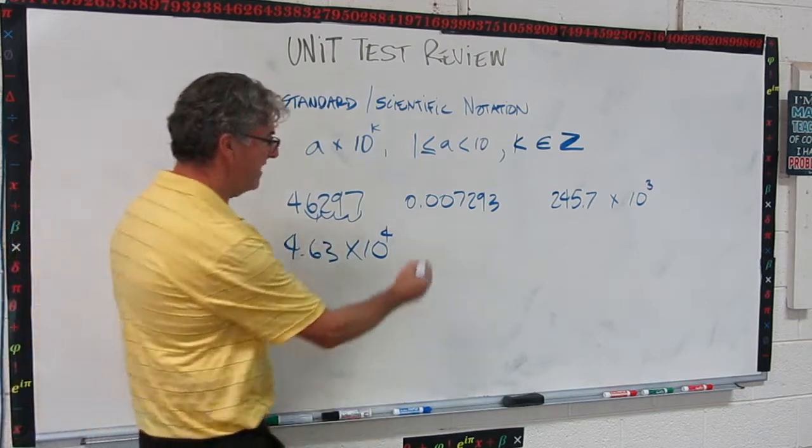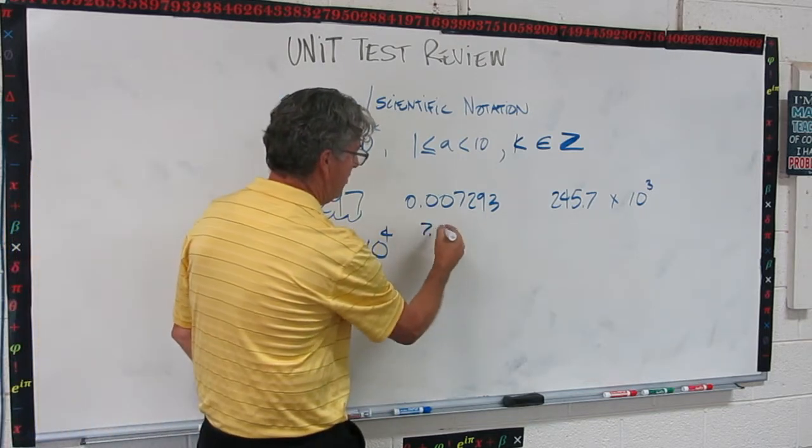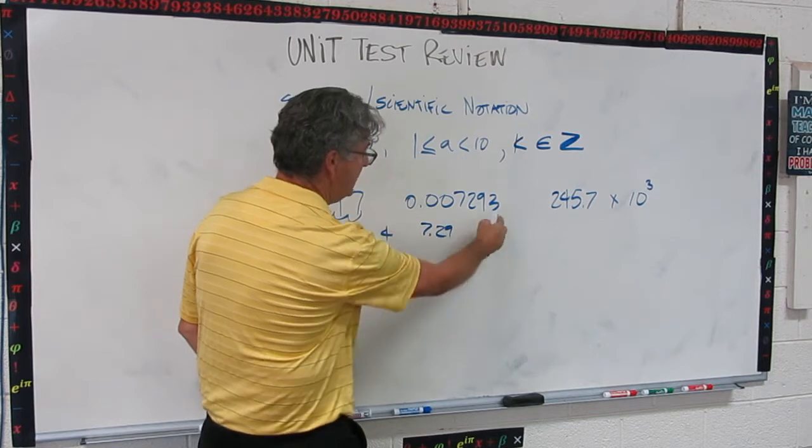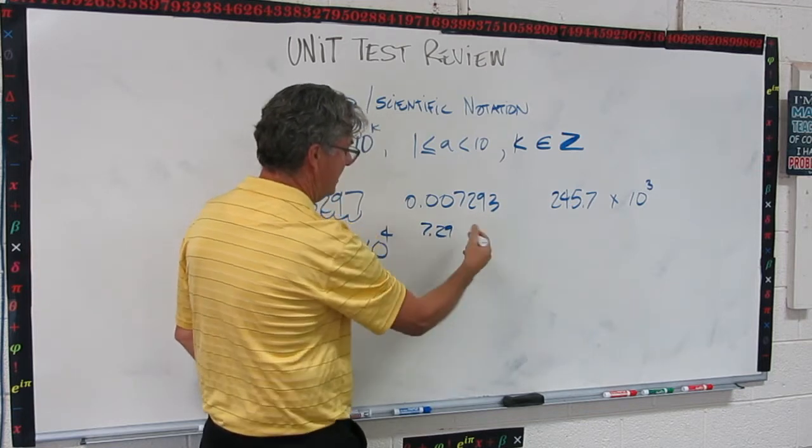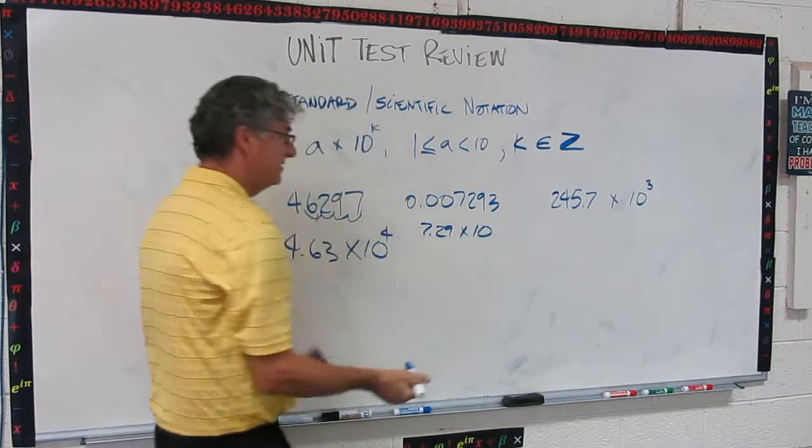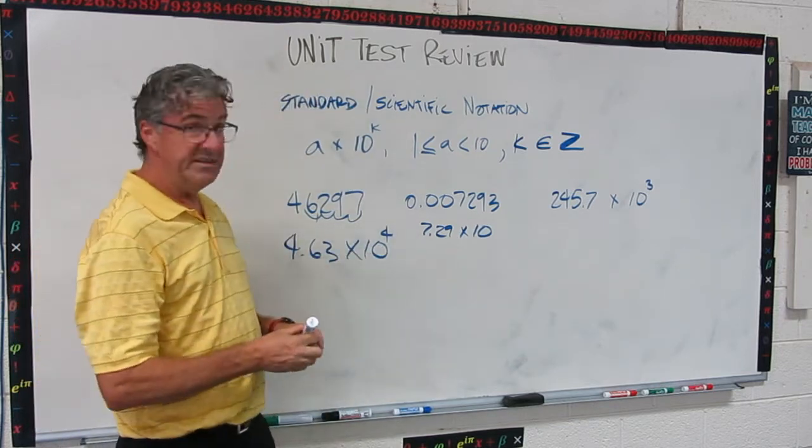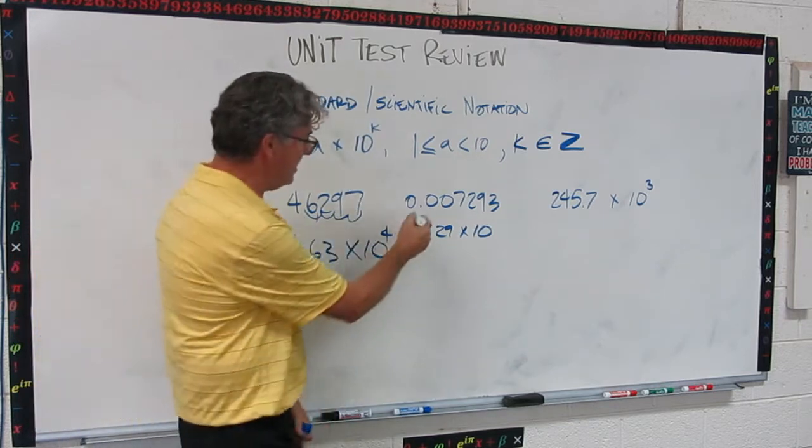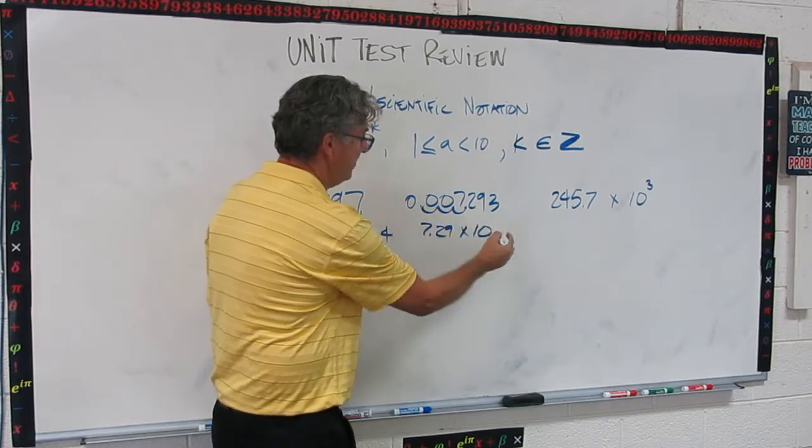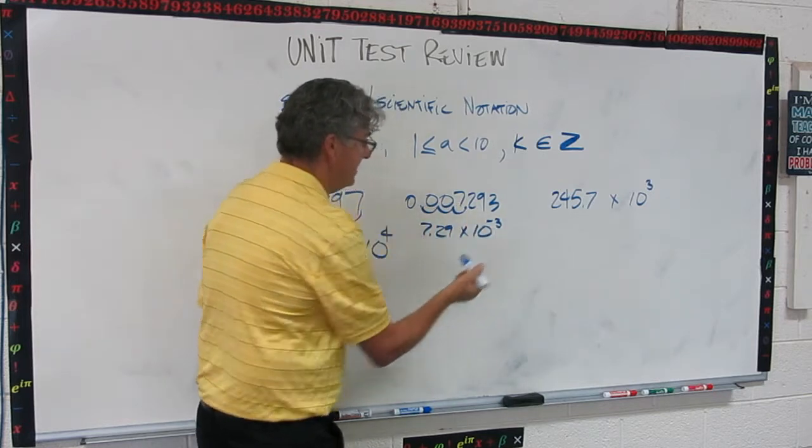Now this one, let's bring that down. That's going to be 7.29, because that 3 is not going to change our 9, times 10 to something. So there's our three sig figs. This time we're going to move the decimal to the right, 1, 2, 3 places, so that's minus 3. Okay? So that gives you that one. Now that one's a little bit different.